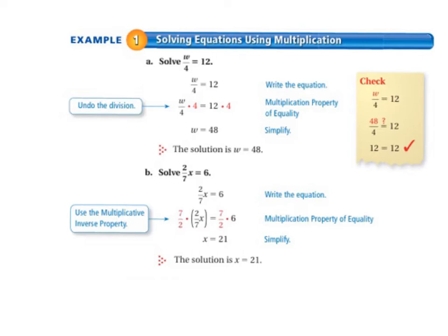So since the 4 and the W are connected by division, then we need to multiply to undo the division. So when we undo the division, we're left with a W on the left-hand side. And on the right-hand side, we multiply 12 times 4. So that gives us W equals 48.